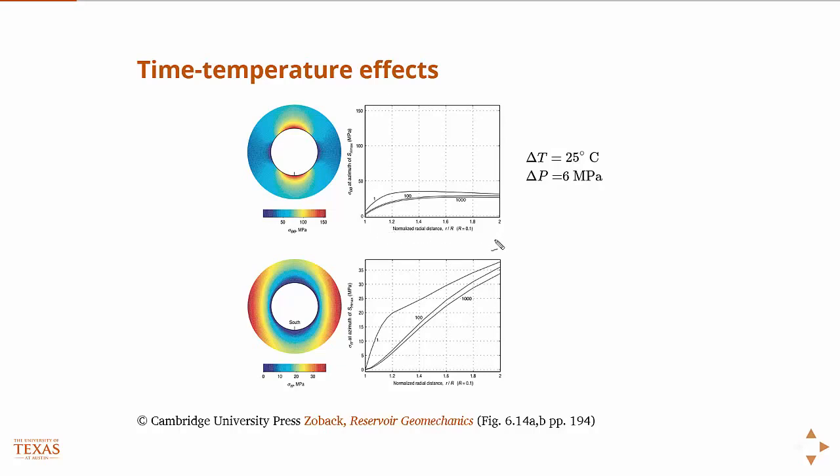And at two, we're two times away from the wellbore wall. And so you can see how the radial stress is increased due to this temperature change. So 25 degrees C temperature change, and there's also a delta P here, a difference in the mud weight and the pore pressure.